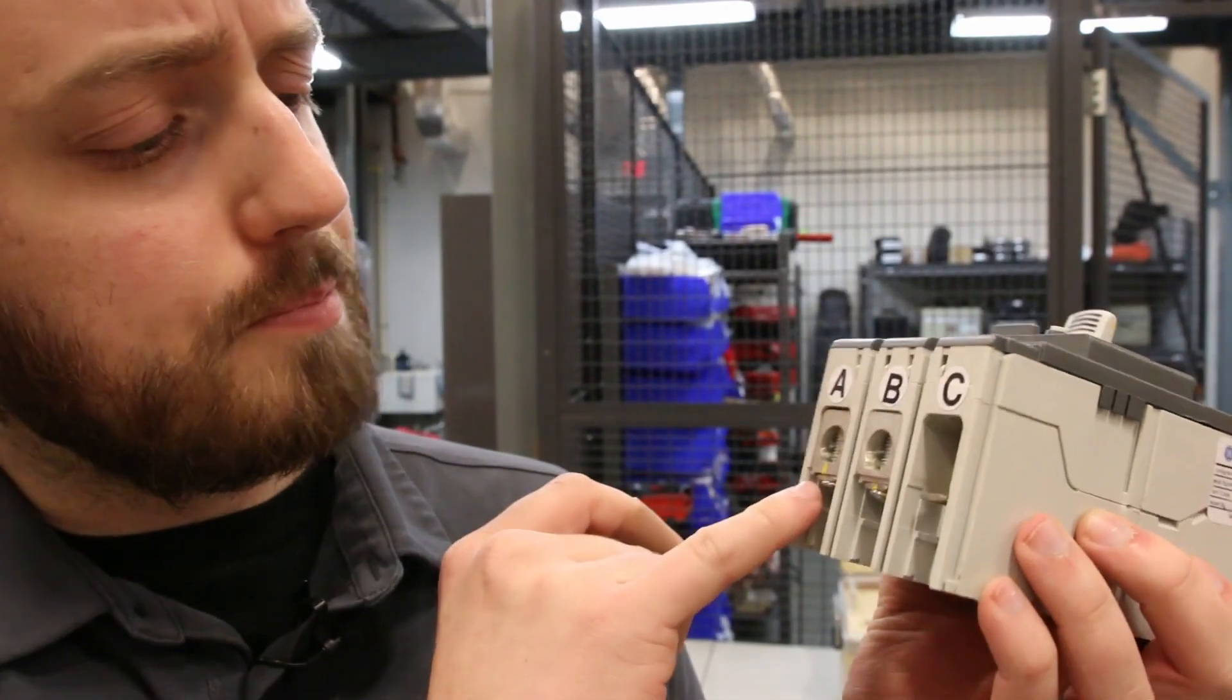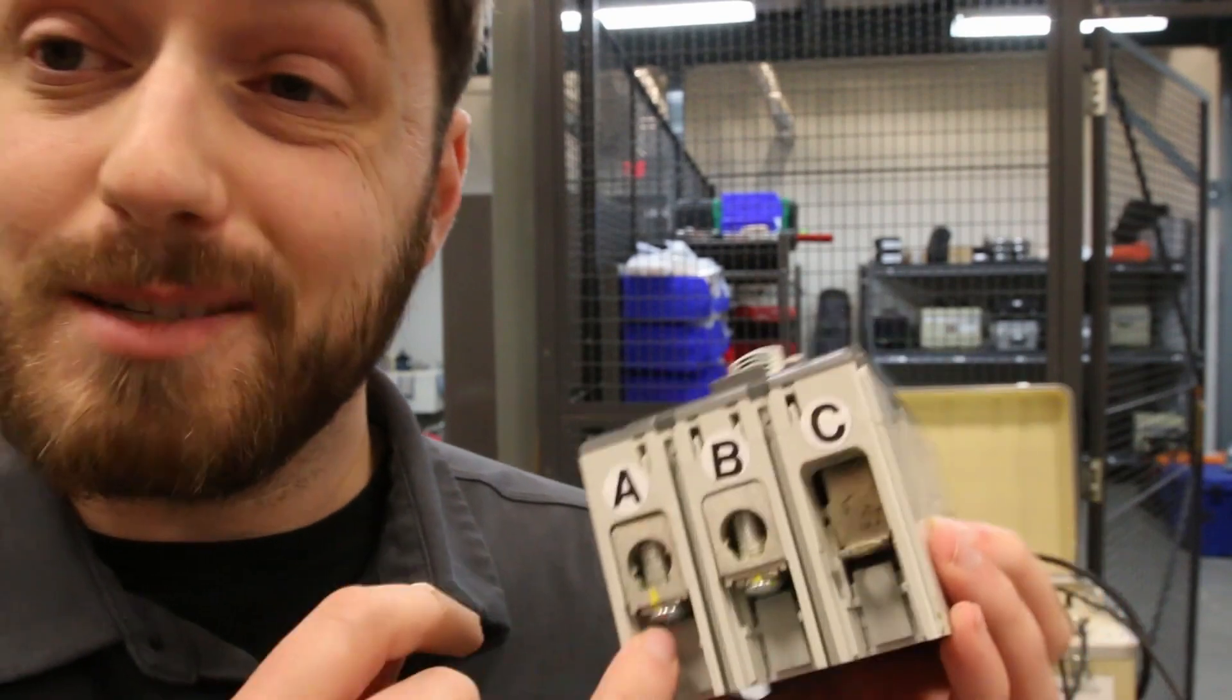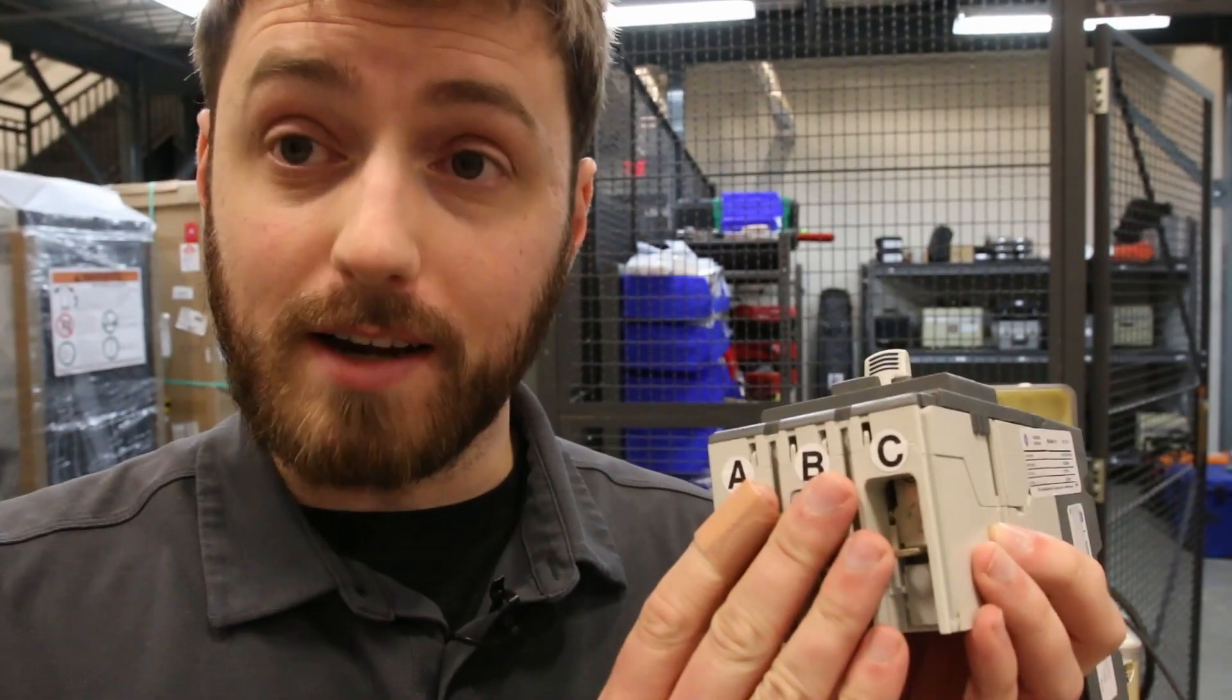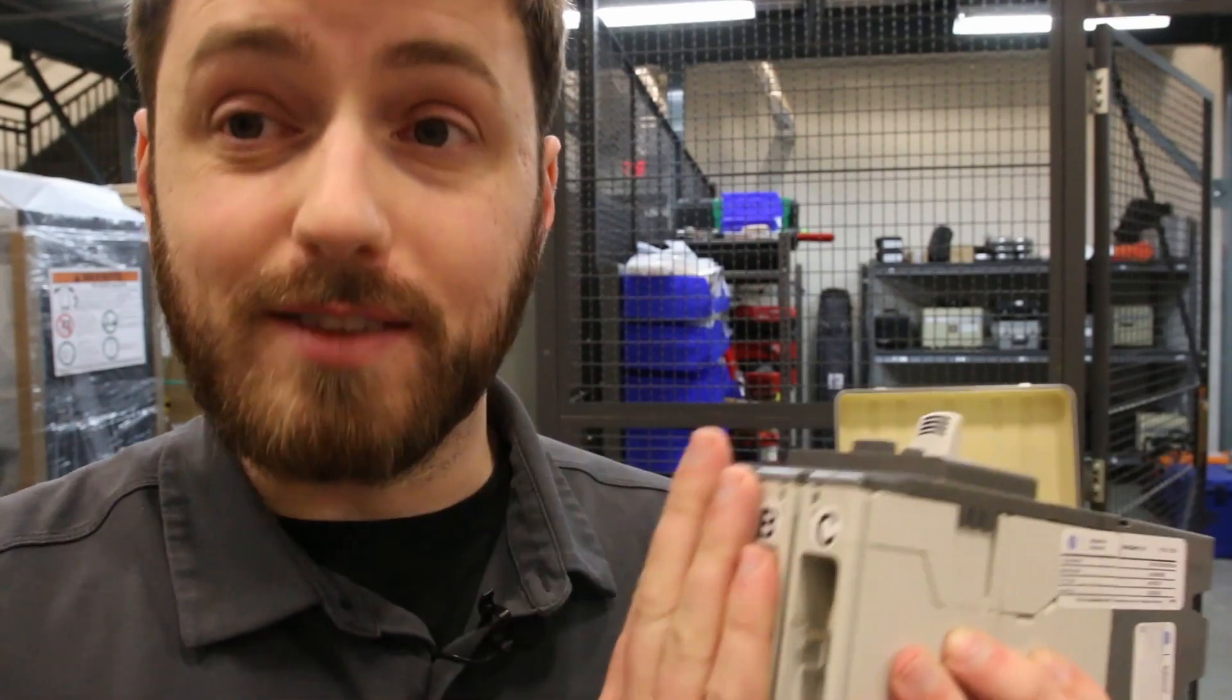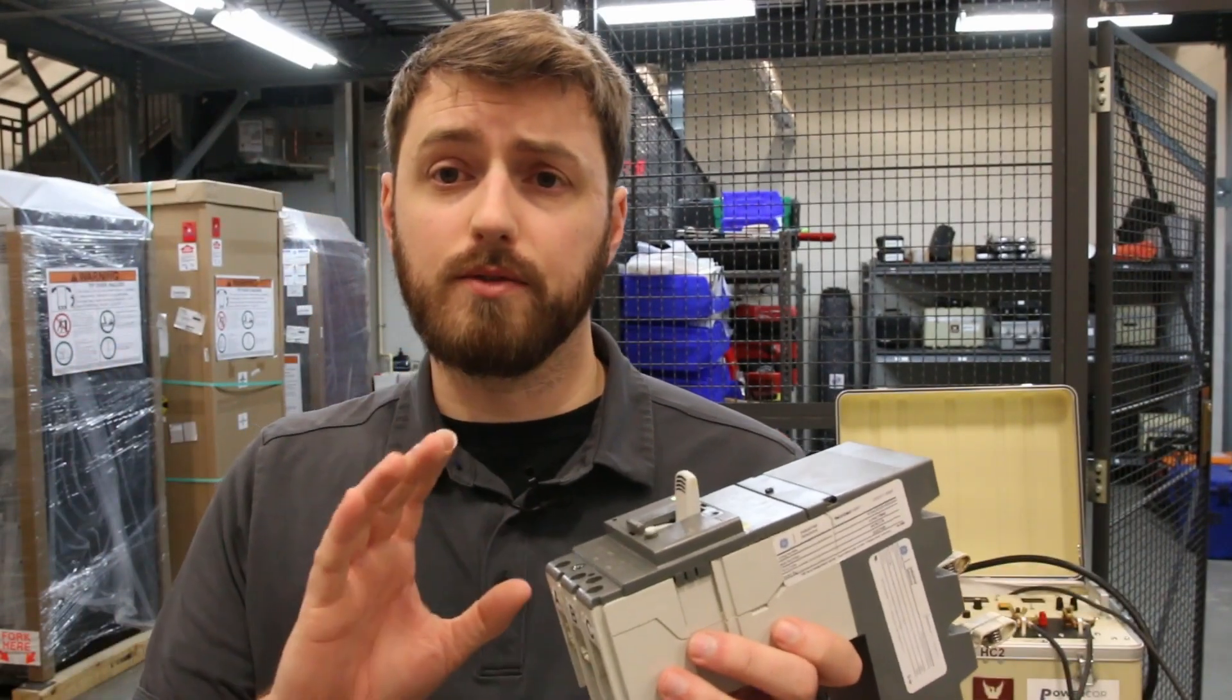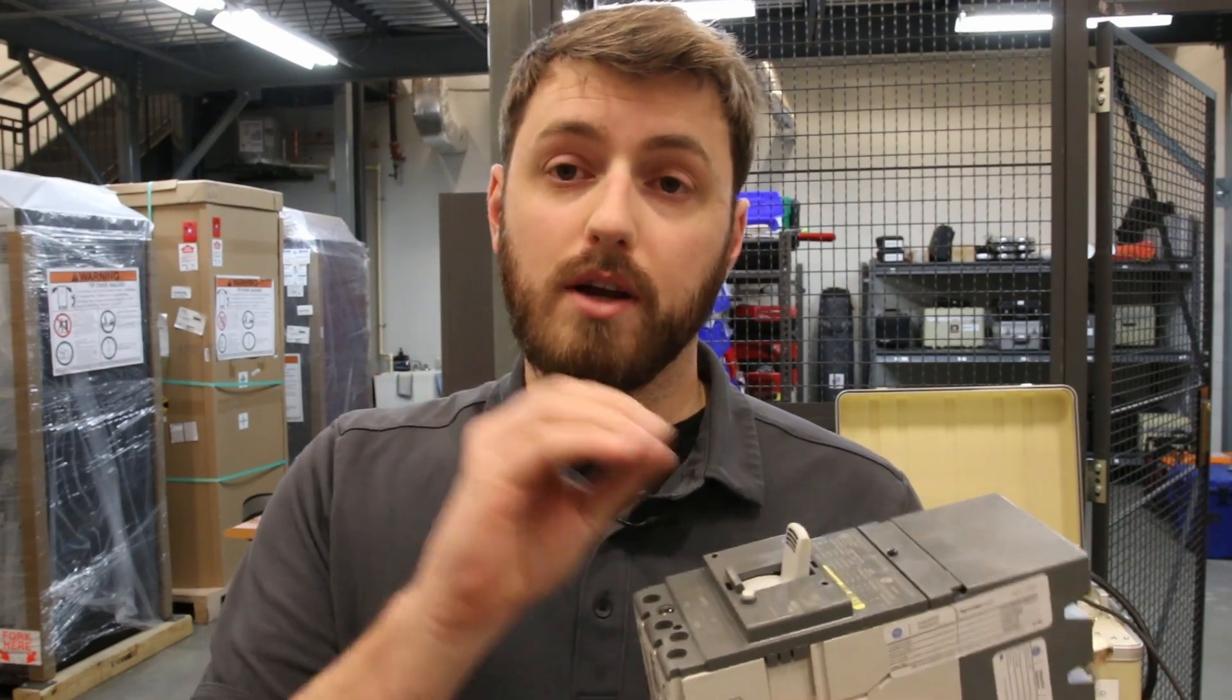But what I think the issue is, is that despite the fact that there's torque seal on here and it's covered from the factory, I don't think those were tight enough. We'll dive into that a little bit in a second, but what I want to do first is I'm going to prove that there's not necessarily an issue with the breaker or the trip unit first.